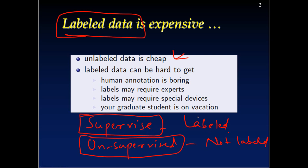Getting data which is labeled — which has some target variable value — is quite expensive, and sometimes it is not very easy to get such data. Many times we have a small portion of labeled data and there is massive unlabeled data. So can we use both combined in some way to improve the predictions? That is the idea of using semi-supervised learning.